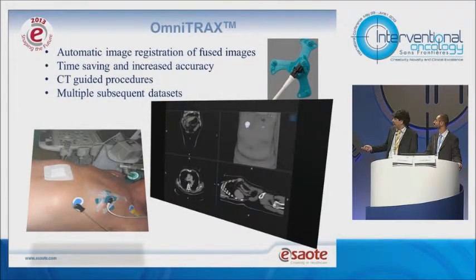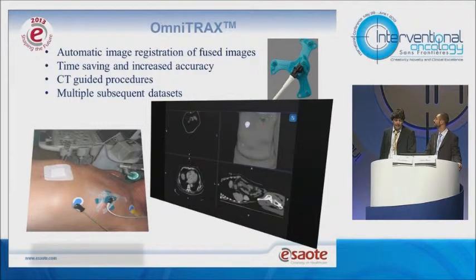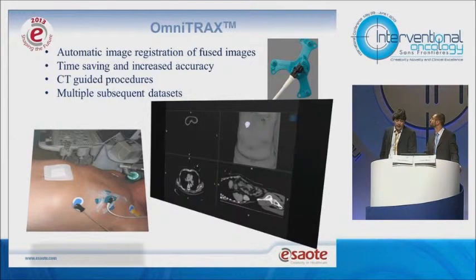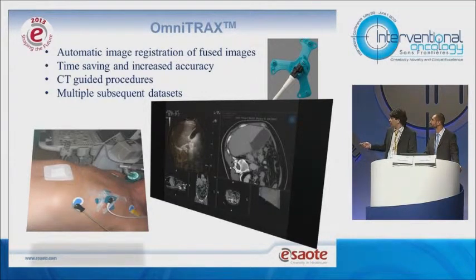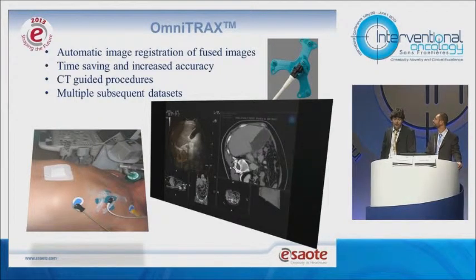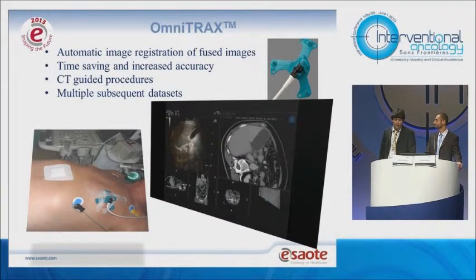Another way to register the patient with their dataset is to use an external device — an evolution of the external marker — into which we can directly plug an electromagnetic sensor. Once the device is identified in the dataset, with one click it is possible to register the data. This is particularly useful for CT-guided procedures, where more than one dataset is needed to assess needle position without real-time ultrasound imaging.